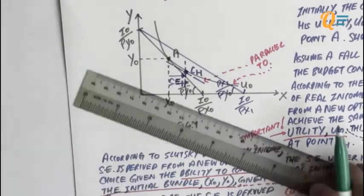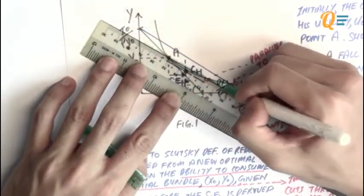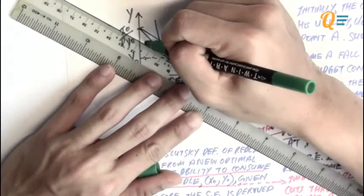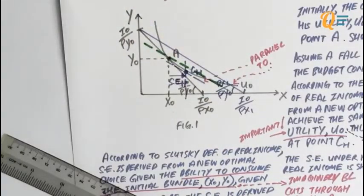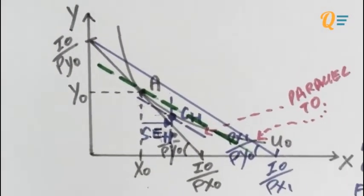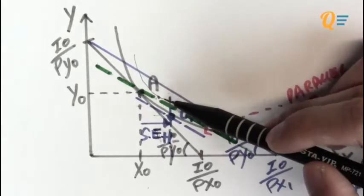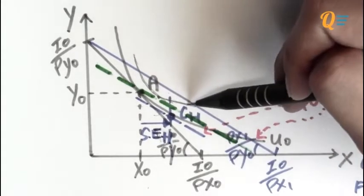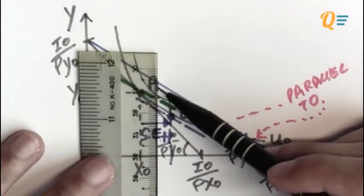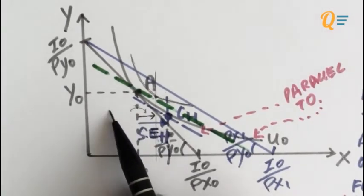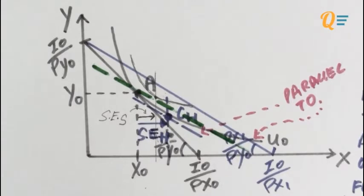So let's go back to the diagram. I'm going to draw a green budget constraint across point A. I'm going to use a darker green marker to draw the imaginary budget line for Slutsky. I'm going to draw a new indifference curve, and it has to be tangent to this green imaginary budget constraint.